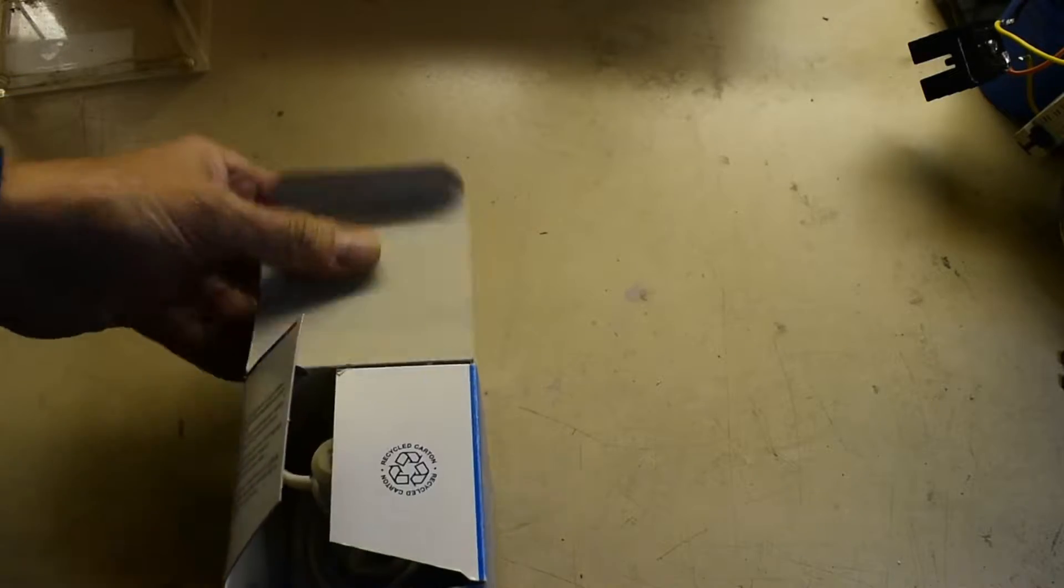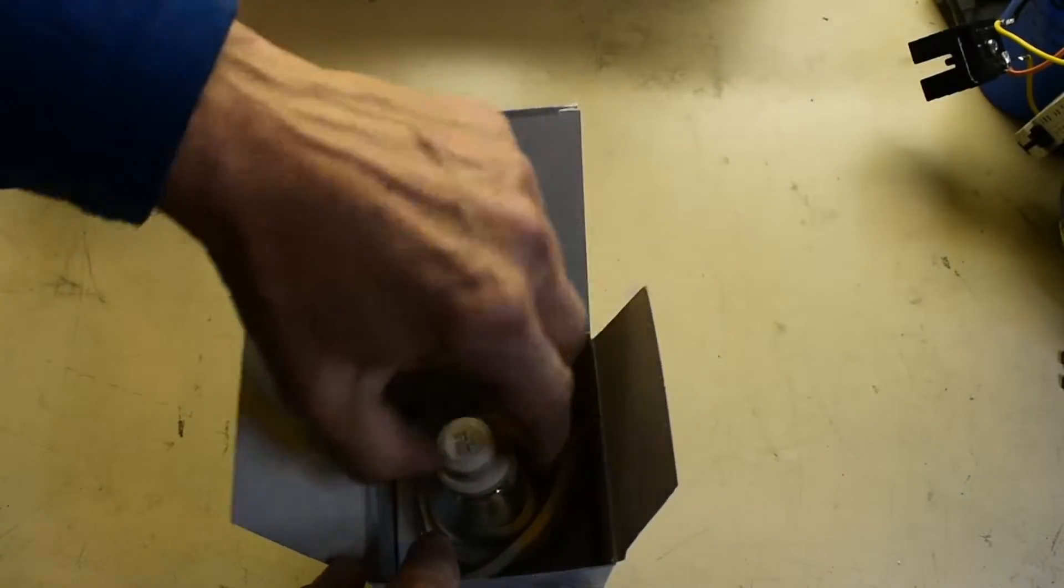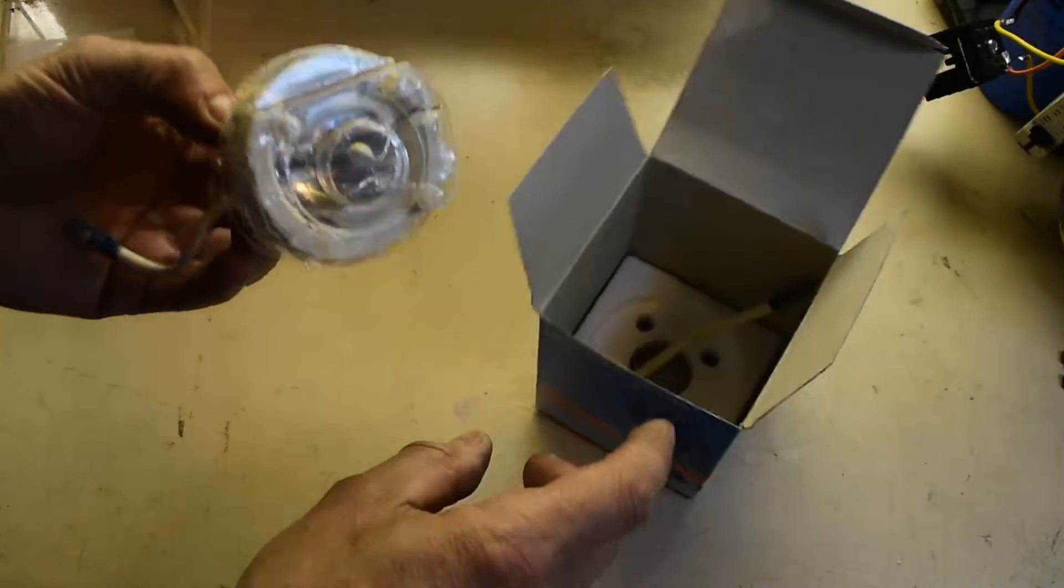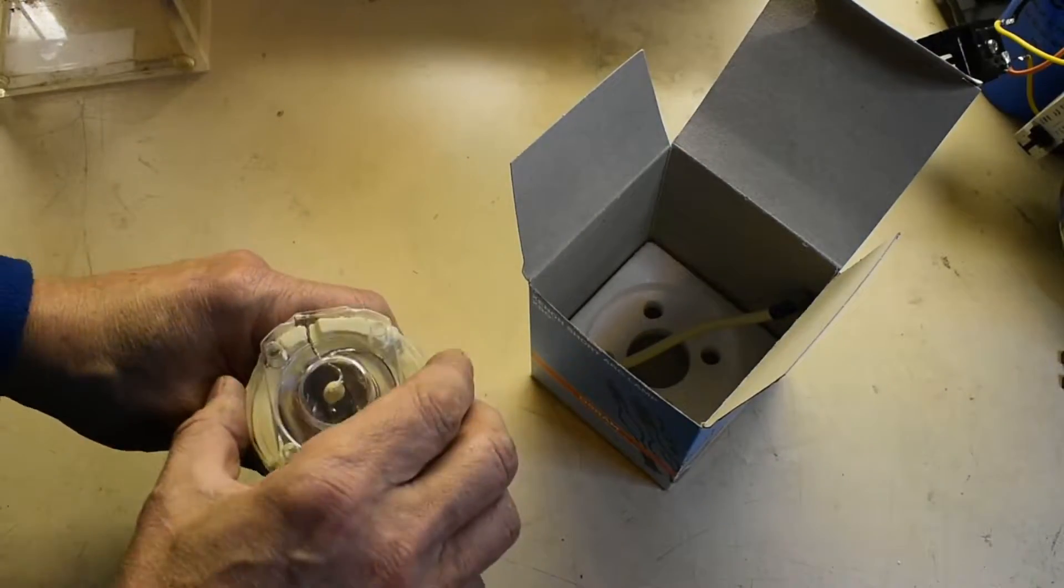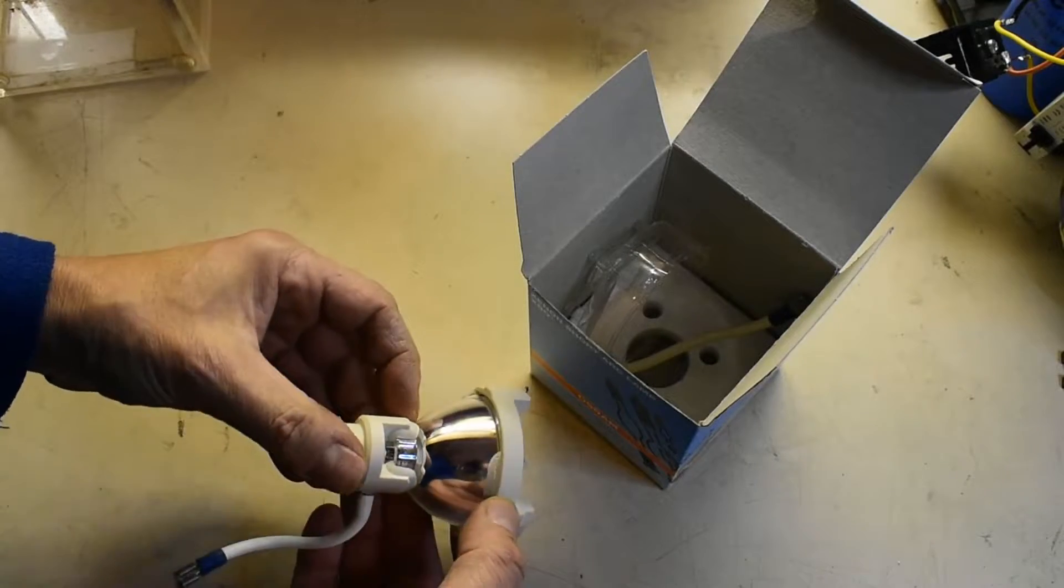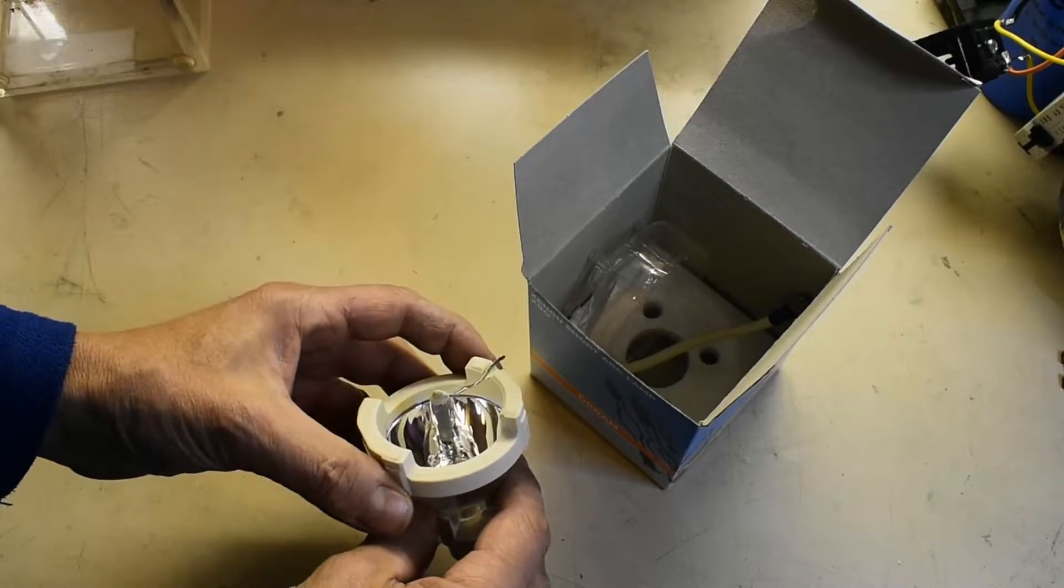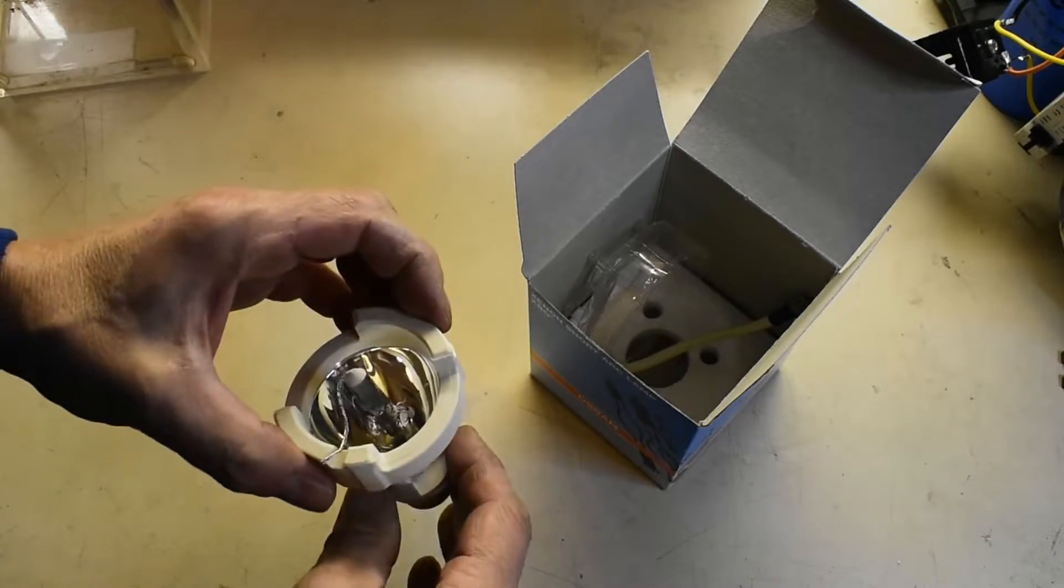Xenon short arc lamps are high intensity discharge lights, but this one has been plugged in the wrong way around. Although it was brand new, the polarity was reversed and it's resulted in damage to the cathode of the lamp.